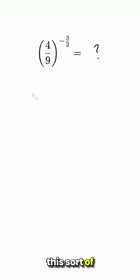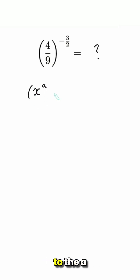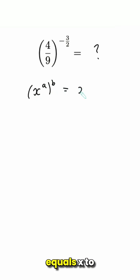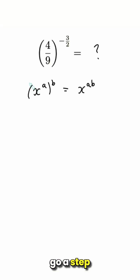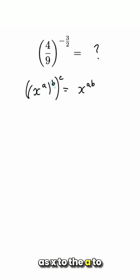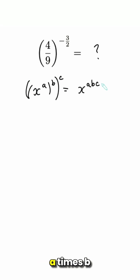To simplify this sort of expression, we'll use the rule that x to the a to the power of b equals x to the a times b, but kind of in reverse. In fact, we'll go a step further and think of it as x to the a to the b to the c equals x to the a times b times c.